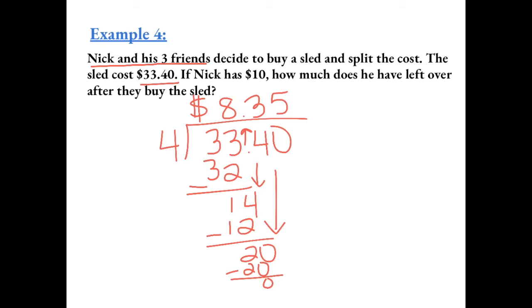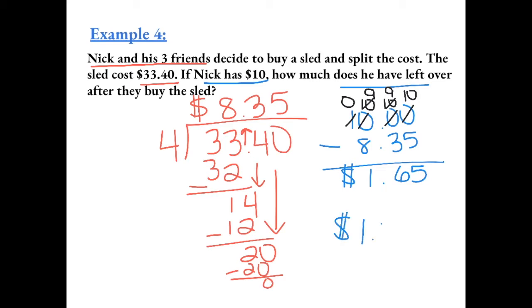So Nick has $10 and we want to know how much will he have left over. So now we have to do $10 minus $8.35. Remember when adding or subtracting decimals, you have to line them up. So now we have to borrow. So first we're going to borrow from the 1 and make this a 10. Now we're going to borrow from this 10 to make this a 10. Now we're going to borrow from this 10 to make this a 10. So now we have 10 minus 5 is 5. 9 minus 3 is 6. 9 minus 8 gives us 1. And then we bring down the decimal. So after buying the sled, Nick will have $1.65 left over.